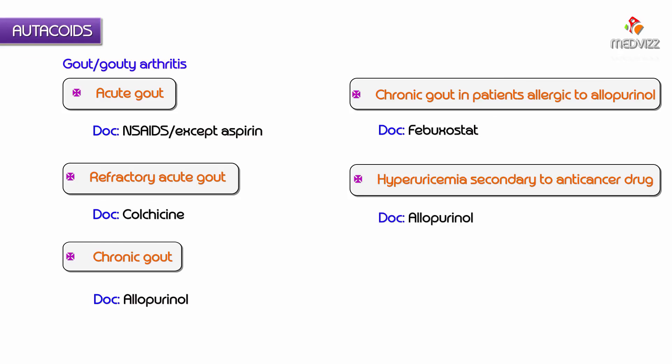These are the various drug of choices where there is a requirement to antagonize prostaglandins, leukotrienes, thromboxanes, or various inflammatory mediators in conditions like rheumatoid arthritis, gout, or gouty arthritis.